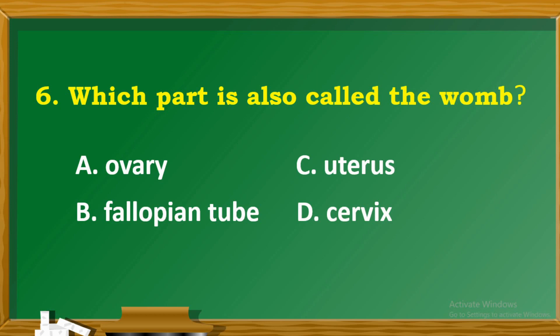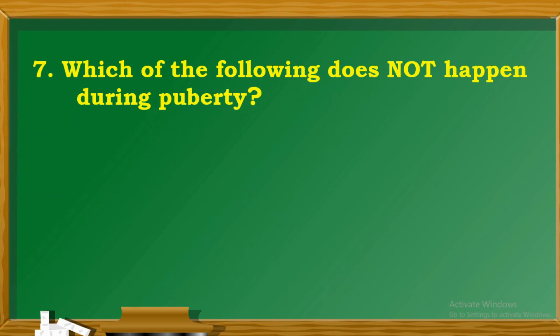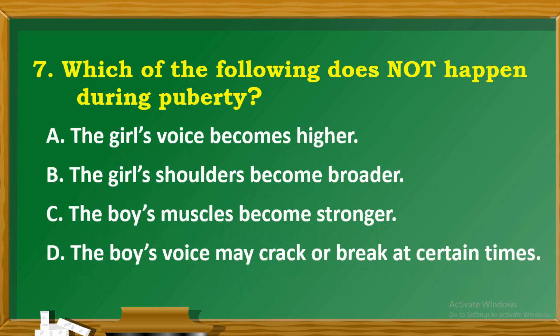Question 7: Which of the following does not happen during puberty? A. Girl's voice becomes higher. B. Girl's shoulders become broader. C. Boy's muscles become stronger. D. Boy's voice may crack or break at certain times.